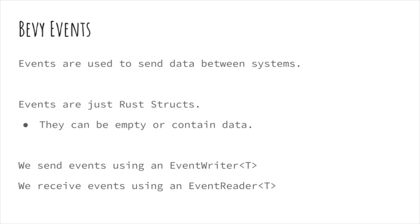This brings us to a new concept: Bevy events. Events are used to send data between systems. Events are just Rust structs — they can be empty or they can contain data. We send events using an event writer, and we receive events using an event reader. Notice that the app exit event that we used didn't hold any data. Just like with resources and components, Bevy provides events for us to use, but we can also make our own. Unlike components and resources, we don't need to use a derived macro to declare a Rust struct as an event, but we do need to register these types that we want to use as events with our app.